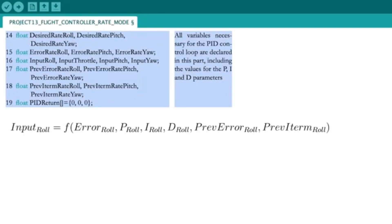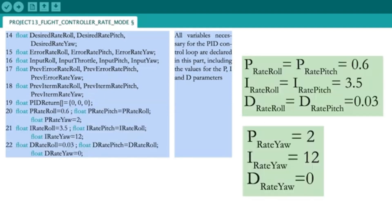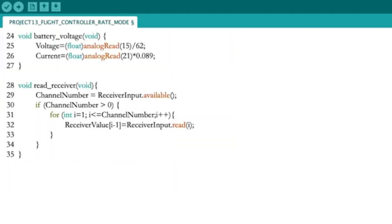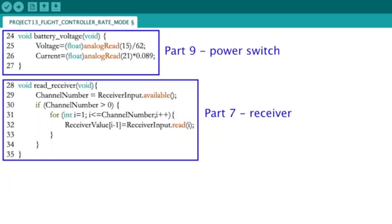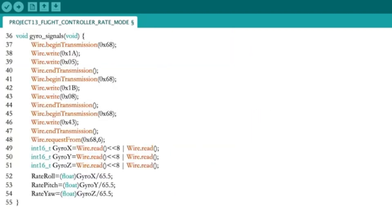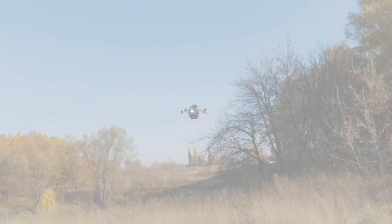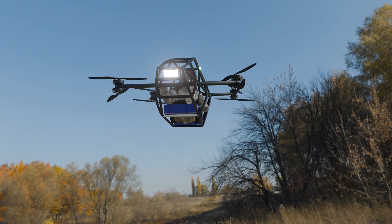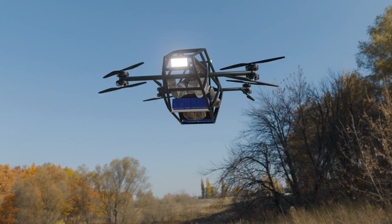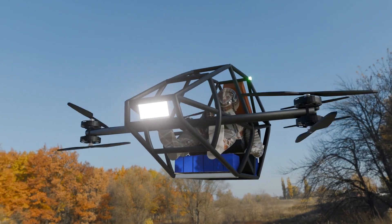The Kalman filter is designed to fuse accelerometer and gyroscope data to compute more accurate roll, pitch, and yaw angles. The program uses the accelerometer readings to correct the angles over time, preventing drift in the gyroscope data. Once the code is deployed, observe how the system behaves in response to physical movement.